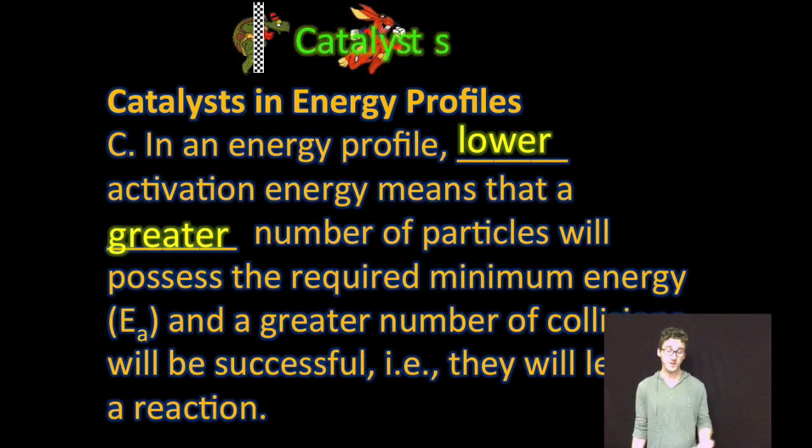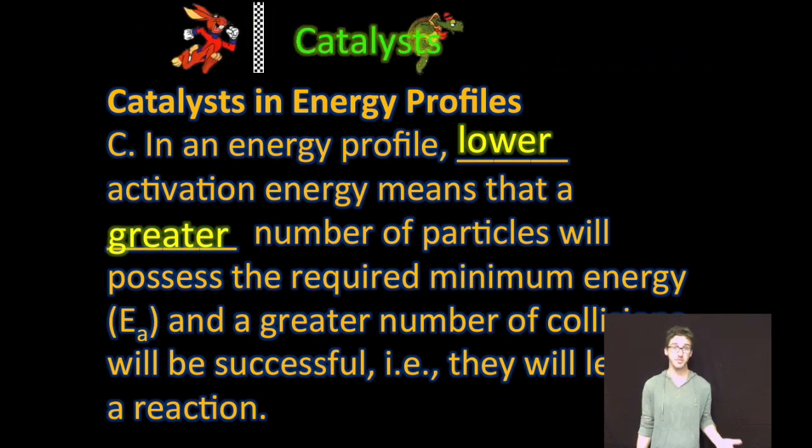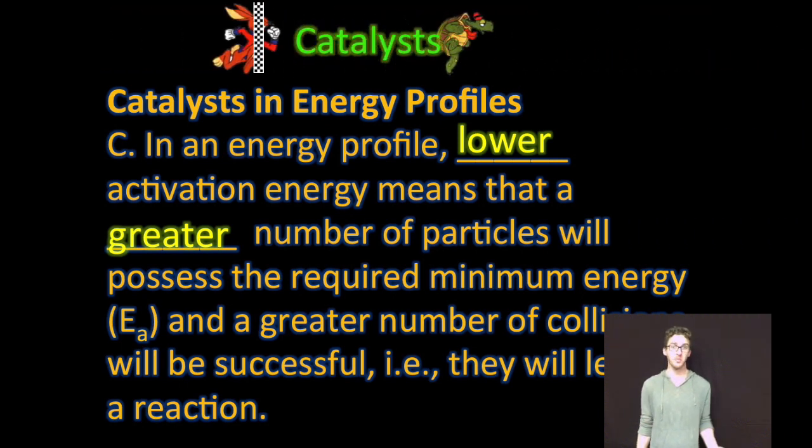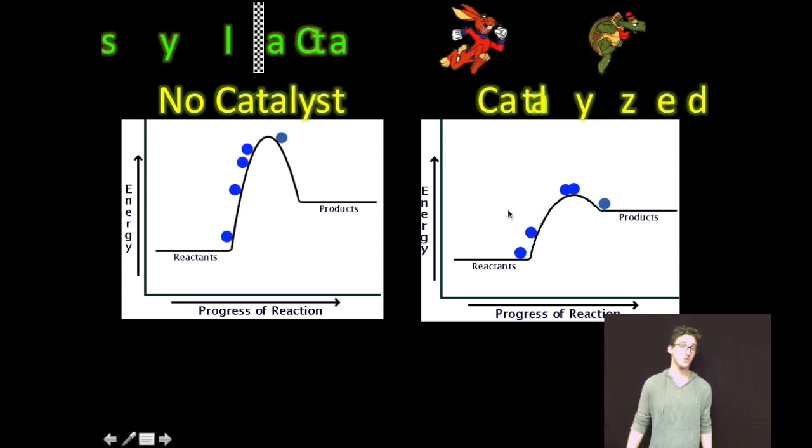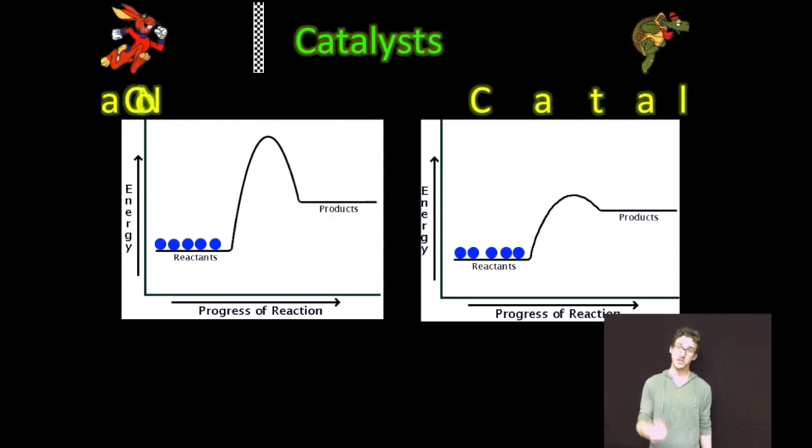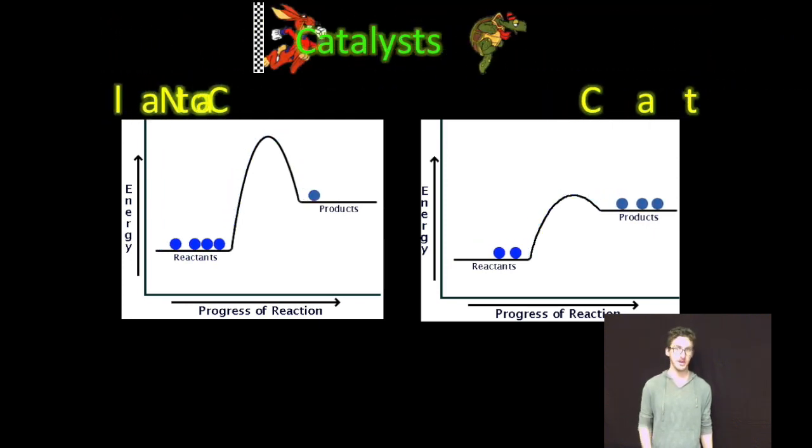Now, you're often going to be asked to think about catalysts and how they're represented in energy profiles. In an energy profile, they're going to lower the activation energy, which again means that a greater number of particles will possess the required minimum activation energy and a greater number of collisions will therefore be successful. Come back to this thriller animation. This is essentially how a catalyst works. And what you're looking for in a catalyzed reaction is a reduced activation energy, a lower hump.